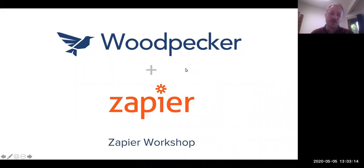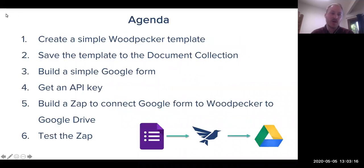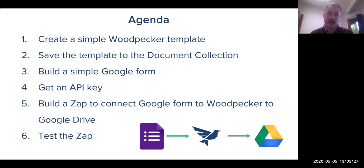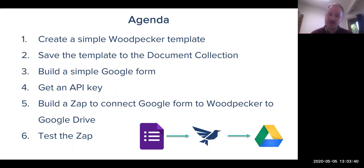What I want to do is quickly walk through a basic slide about what we're going to be going through today. Basically, we're going to create a simple Woodpecker template out of a simple certificate of incorporation, save that template to the Woodpecker document collection, and then build a simple Google Form that matches the fields in that certificate of incorporation so we can share it with a client.